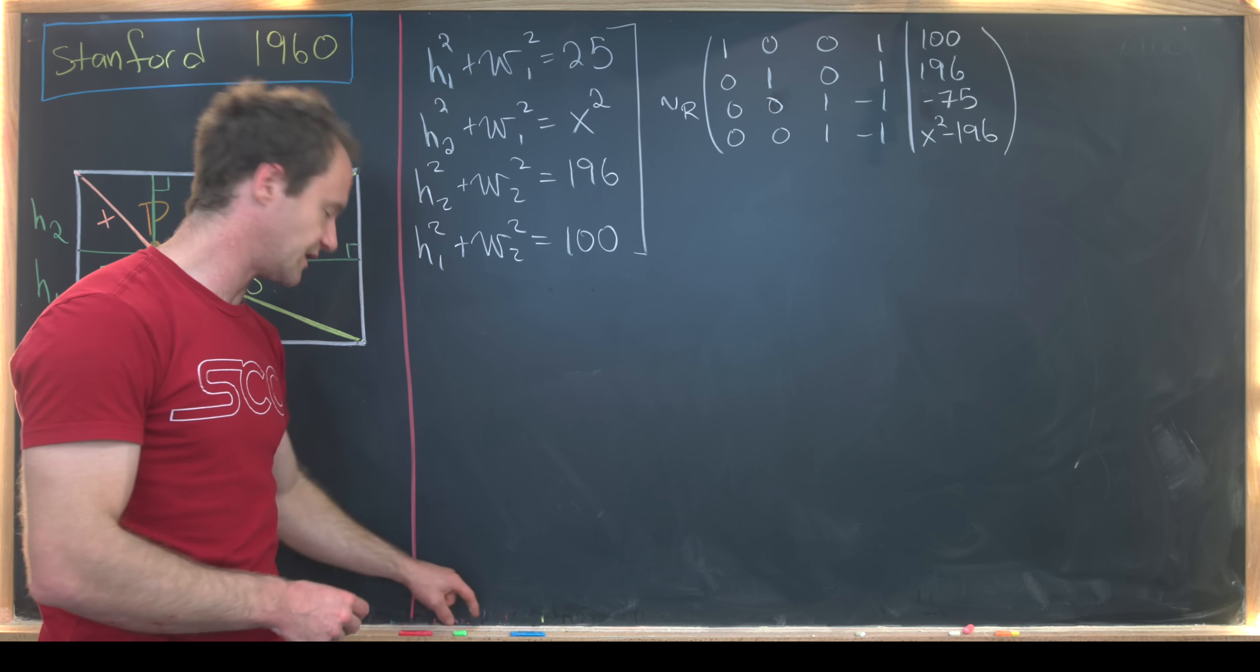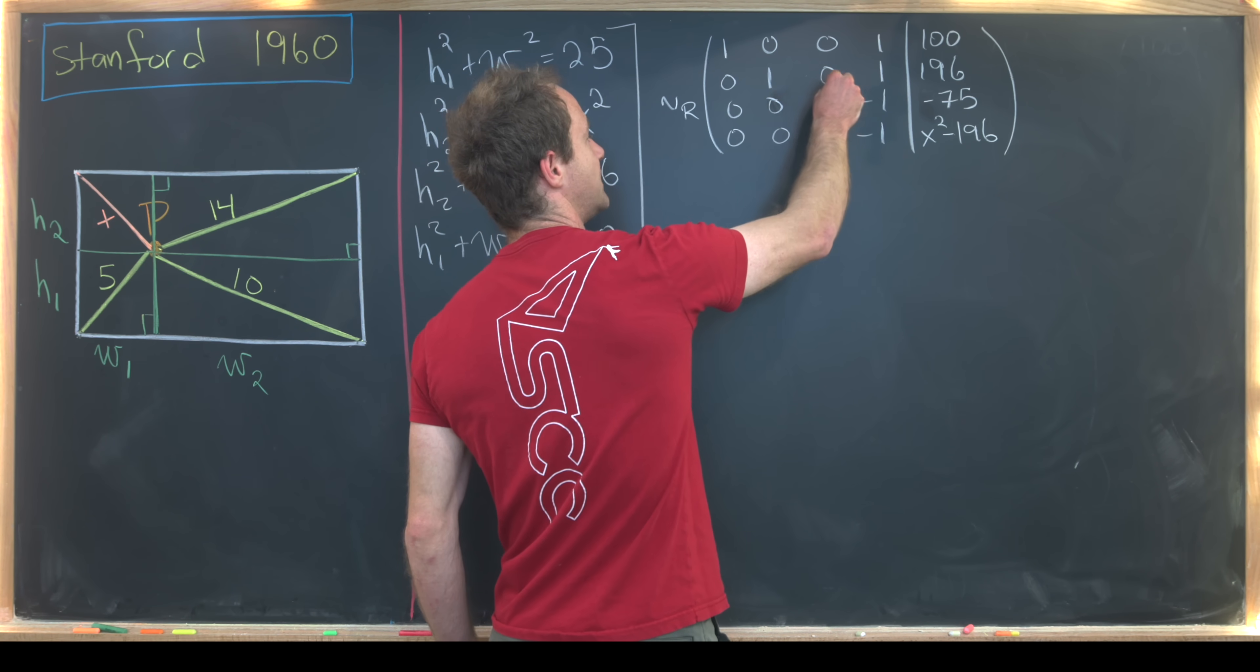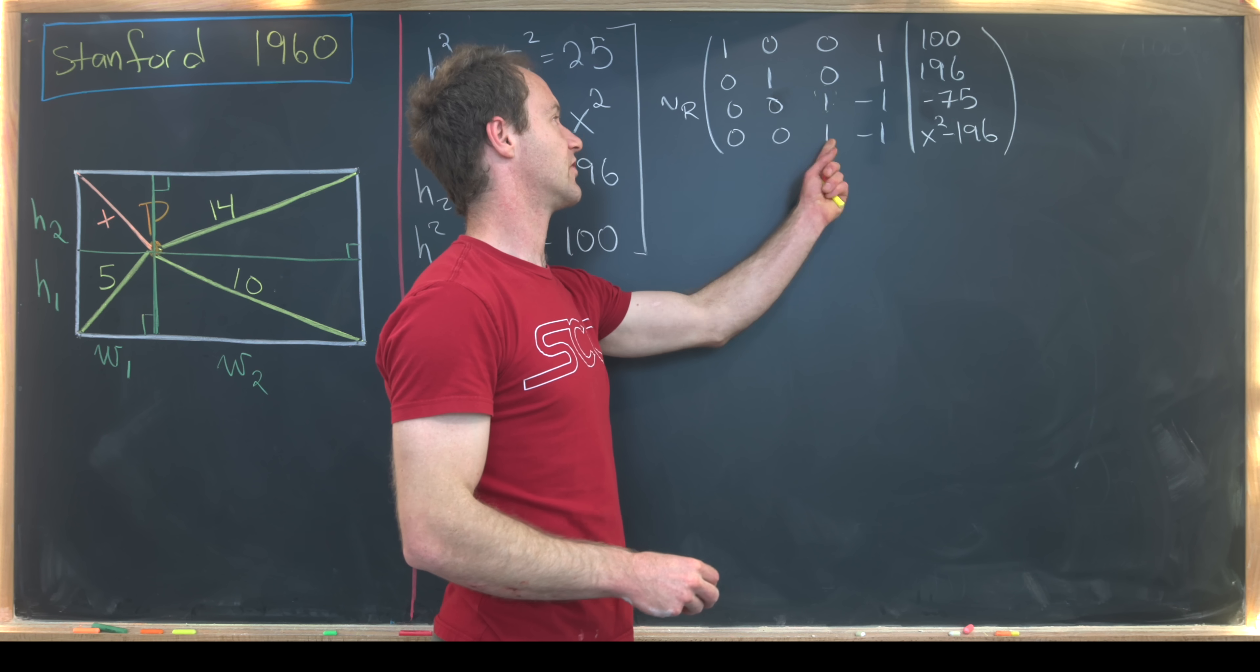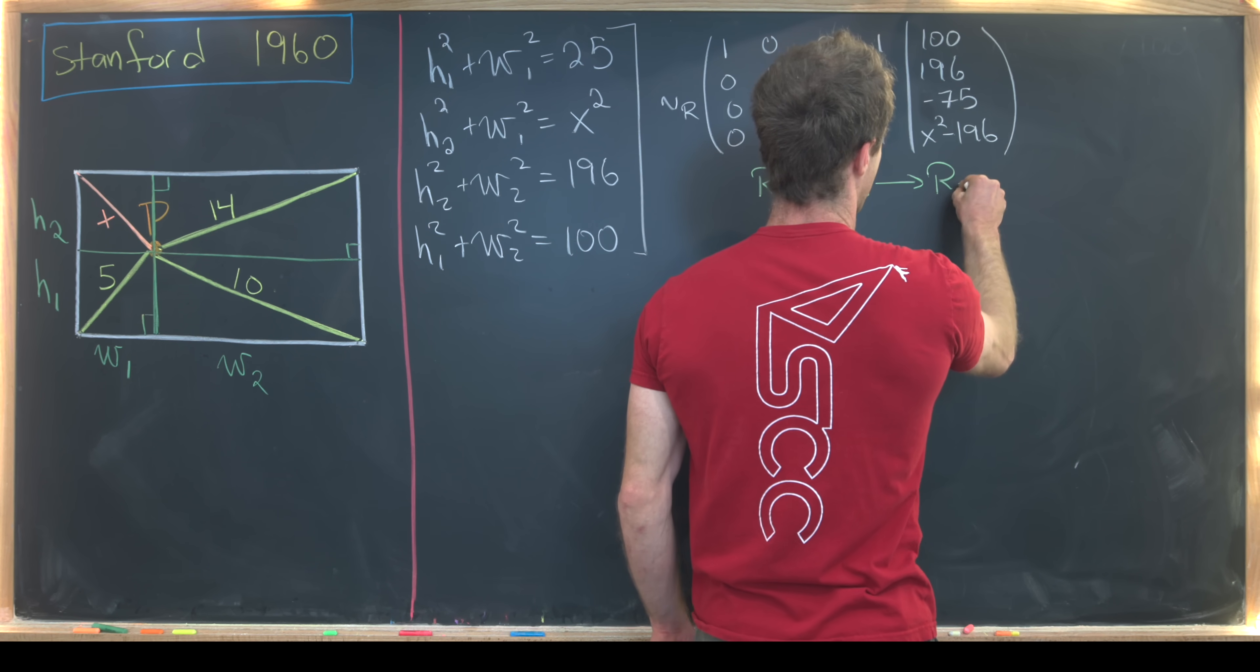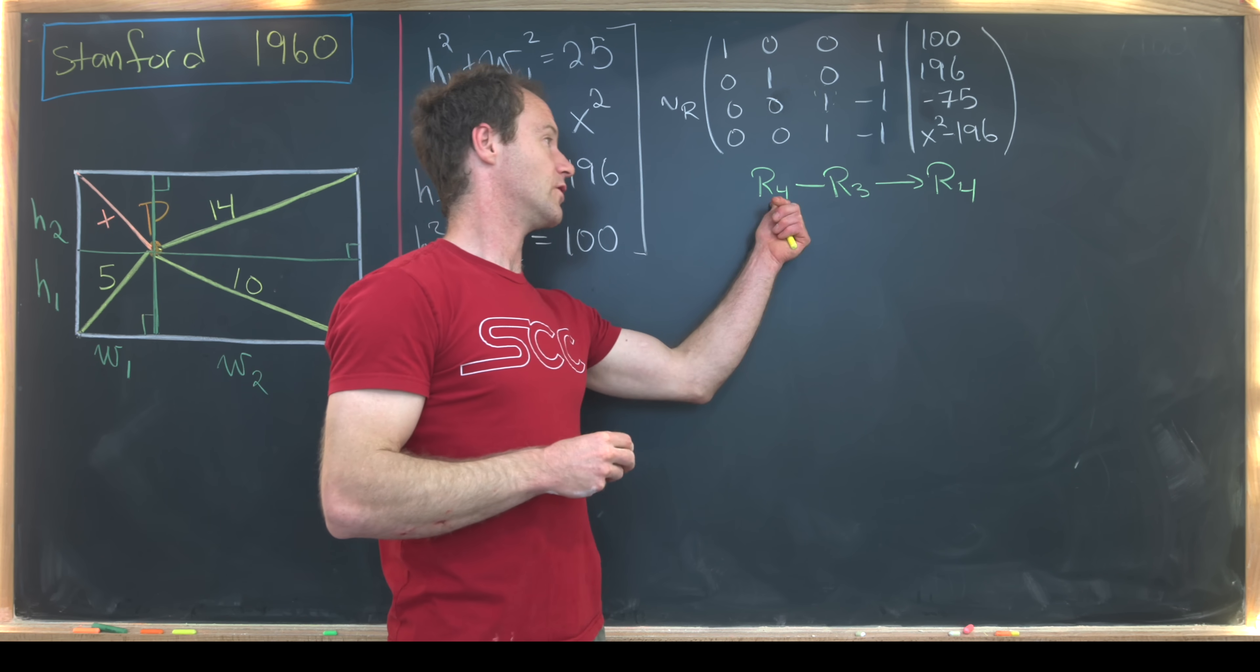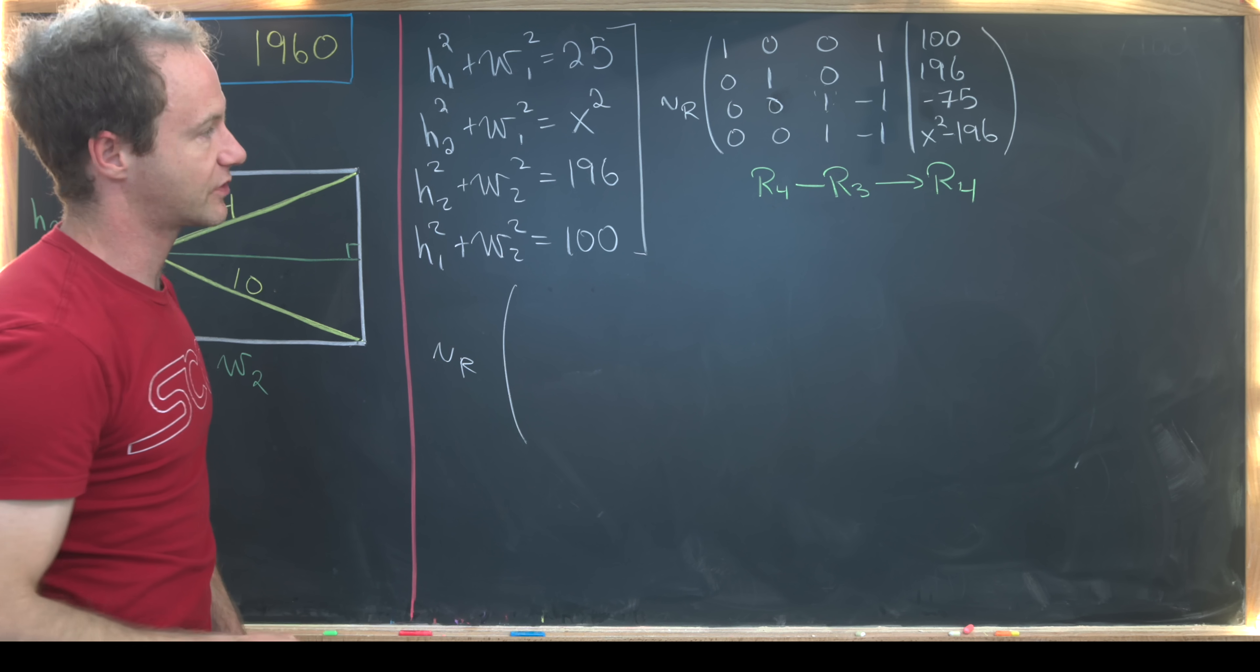We just did a couple of row operations that showed the augmented matrix equivalent to solving this system of equations. Now we want to continue putting this in row reduced echelon form. So the next thing we do is probably subtract row 4 and row 3, keeping in mind that this pivot is in the correct position already. We've got a 1 in the third row in the third column. So like I said, we'll do row 4 minus row 3. That becomes my new row 4.